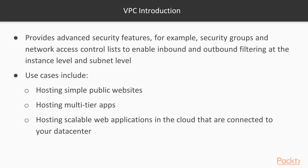One of the benefits of a VPC is it gives you advanced security features. You can create security groups and network access control lists to enable inbound and outbound filtering at both an instance level and a subnet level. There are wide-ranging use cases beyond enterprise environments. For example, even a simple public website with a database layer — while you want your website to be public, you certainly don't want your database to be public. With a VPC, you can place your database instance in a private subnet so it's not accessible from outside the VPC and can only be accessed by the server running your website.